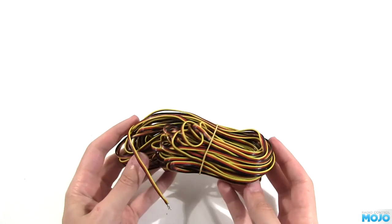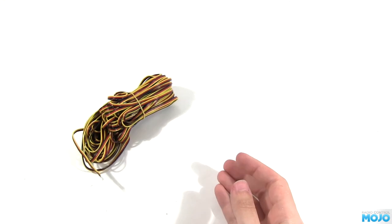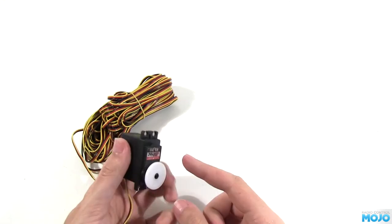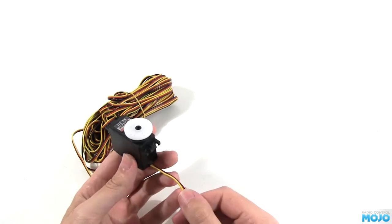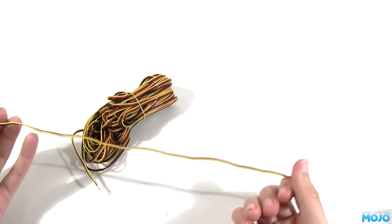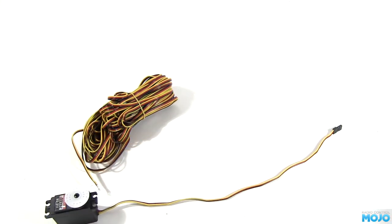Second, you'll require some servo wire. Any good model shop should stock it in various colors to match different servo brands. Now, this method does invalidate your warranty, so thoroughly test the servo before you start.